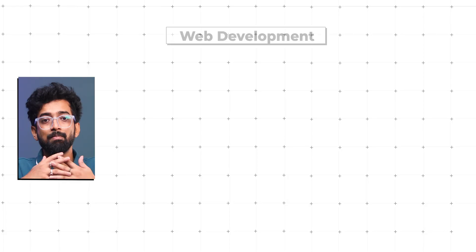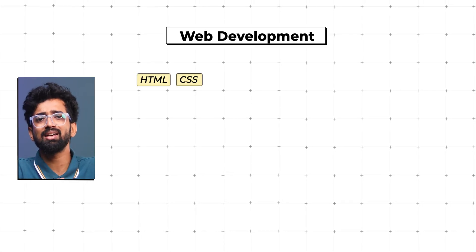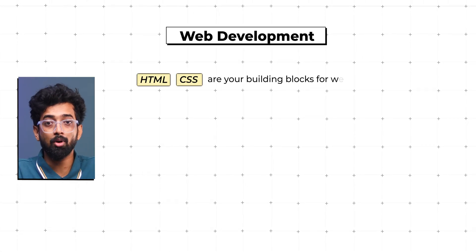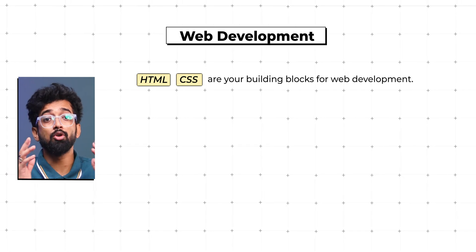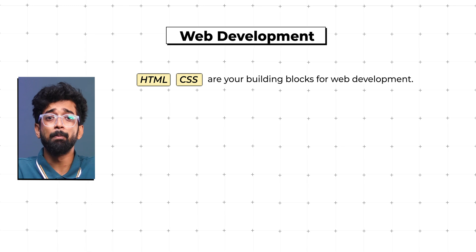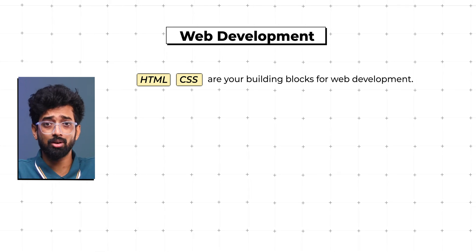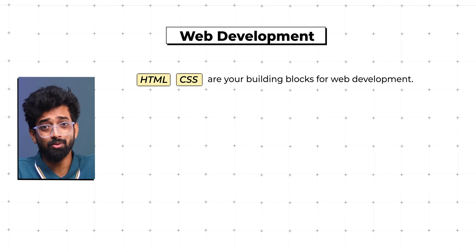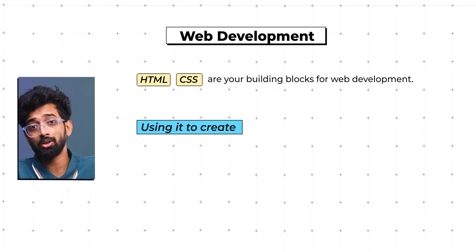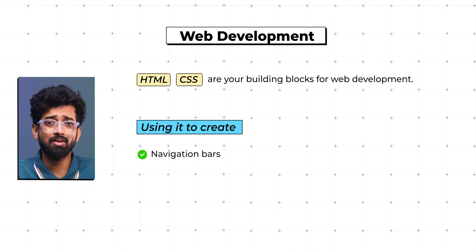In the process, don't forget about the front end. HTML and CSS are your building blocks for web development. HTML gives structure to your web pages while CSS adds style. Bootstrap is a game changer here, making it easy to design responsive and attractive UIs. You'll use it to create navigation bars, forms, and modals, ensuring your web applications look as good as they function.